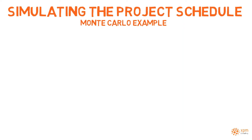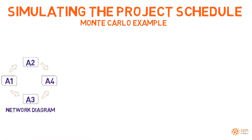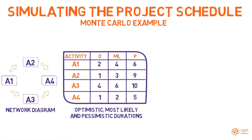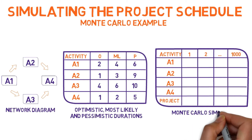Let's apply these concepts to a simple example with four activities. Before initiating the simulation, the project manager prepared a network diagram and collected optimistic, most likely, and pessimistic durations for each activity. The estimates were collected in weeks. The Monte Carlo simulation will be run 1000 times.